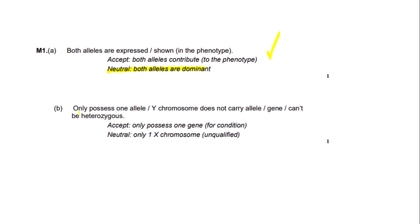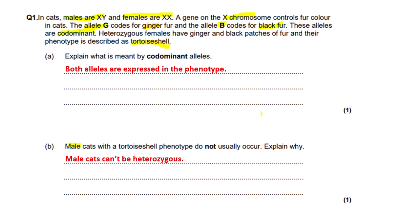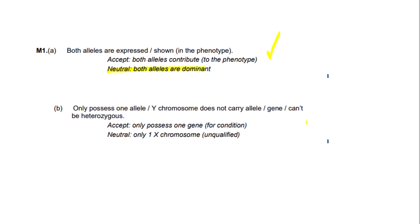The second question asks: male cats with tortoiseshell phenotype do not usually occur — explain why. Males are XY so they only carry one X chromosome, and the fur colour gene is on the X chromosome. The tortoiseshell phenotype requires heterozygosity, but males can't be heterozygous as they only carry one X chromosome. The mark scheme accepts: 'only possess one allele,' 'the Y chromosome does not carry the allele,' or 'can't be heterozygous.' Writing only 'they have one X chromosome' is marked neutral — not specific enough.